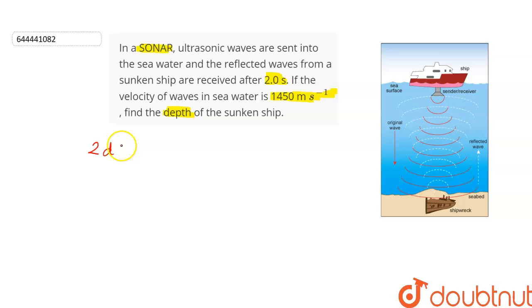So, the distance traveled is equal to the speed times the time taken. We are given that the speed of waves in water is equal to 1450 meters per second and the time after which they are received is equal to 2 seconds. Let's substitute the values in this equation.